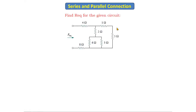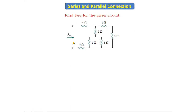Let's see the first problem: find the total equivalent resistance for the given circuit. For this circuit we have to find out the total equivalent resistance. There are a total of seven resistors here. Using series and parallel operations, we will convert these seven resistors into one single resistance — that is, we will find the total equivalent resistance.